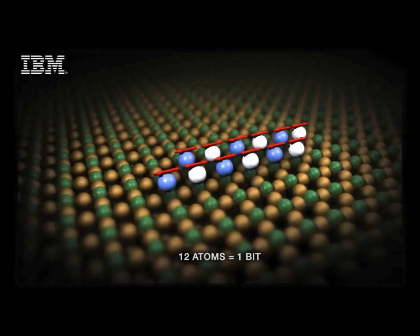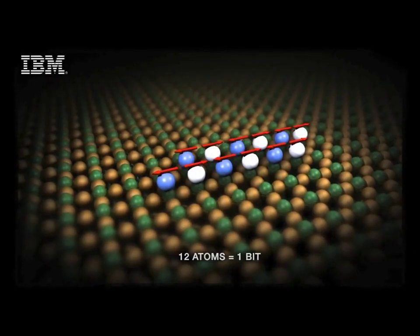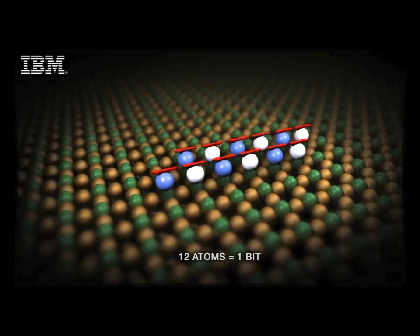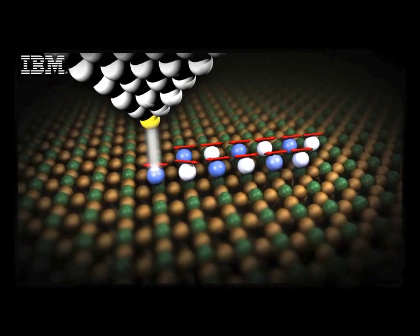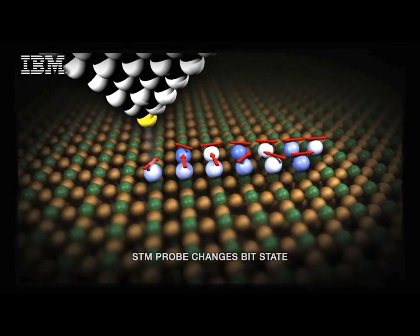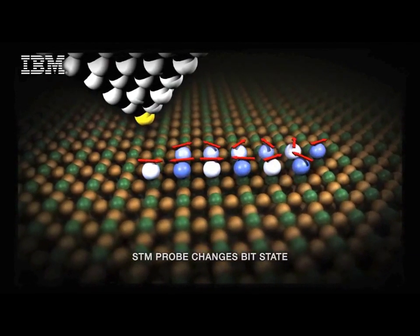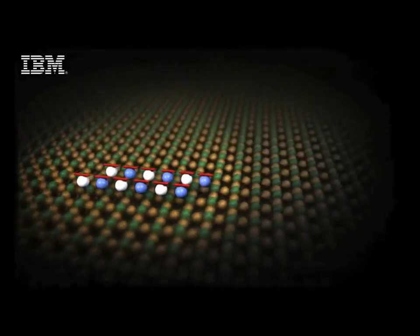Here you see a representation of a single magnetic bit consisting of 12 atoms that we built with a scanning tunneling microscope on this surface. The tip of the scanning tunneling microscope can also be used to switch the magnetic information on this bit from a zero to a one or from a one to a zero.